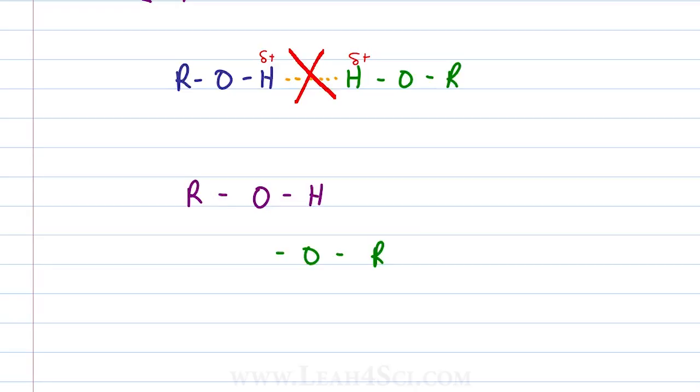Instead you have to line them up so that the partially negative oxygen is close to the partially positive hydrogen. This allows the partially negative oxygen and partially positive hydrogen on the left to interact with each other and the hydrogen on the right interact with the oxygen on the right. What you see here are actually two sets of hydrogen bonds because each of these scenarios where a partially negative oxygen attracts a partially positive hydrogen is considered one hydrogen bond and this is considered a very strong intermolecular force.